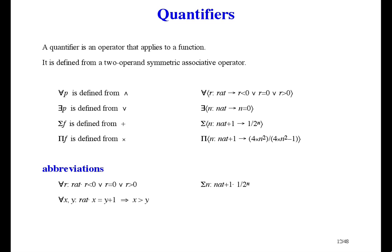The other abbreviation is to group the variables when there is a repeated quantification with the same domain. For all X and Y in RAT, something — really means: for all X in RAT, for all Y in RAT, something. For another example, the sum as N and M vary over 0 to 10 of N times M really means the sum as N varies over 0 to 10, of the sum as M varies over 0 to 10, of N times M.